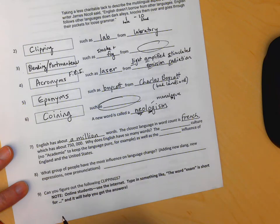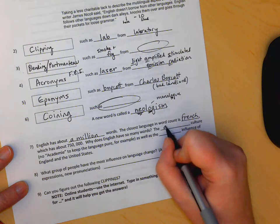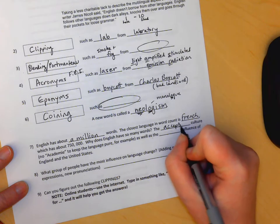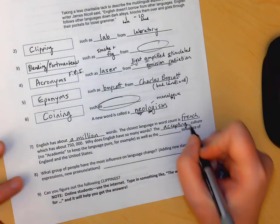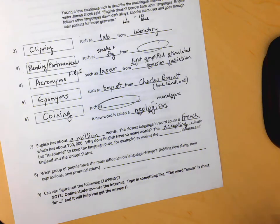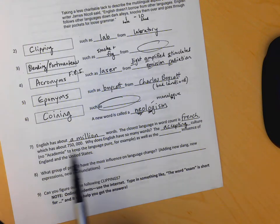Why does English have so many words? The accepting culture, especially back in the big migration, the melting pot of America, we had French and Italian and Jewish people all coming in. Some cultures and languages have institutions that try and keep the language pure and set rules for it.